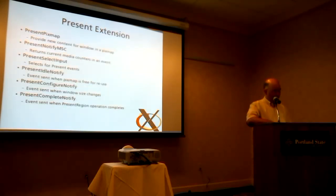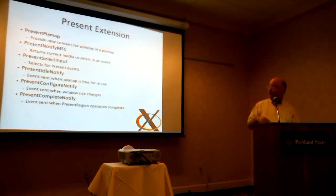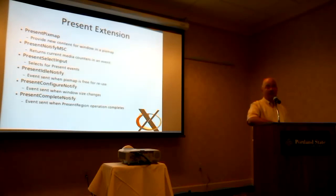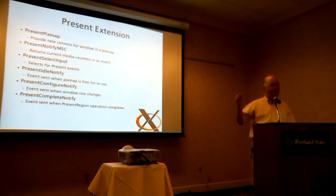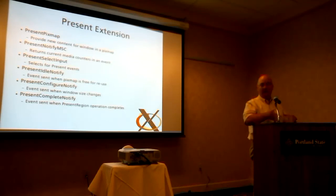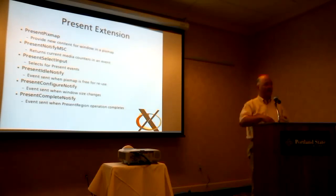The next piece is the present extension. The first request has recently been renamed. I have three requests and three events. You can say: take this pixmap and make it the contents of my window now. You can say: send me an event when this frame time has passed — that's required for the OpenGL extension to block waiting for a particular frame. And you can select for events. When the X server is done using the pixmap you passed to it — either the copy is done or the pixmap is no longer being used as a scan-out buffer — you'll get an idle event telling you the pixmap is available for reuse.